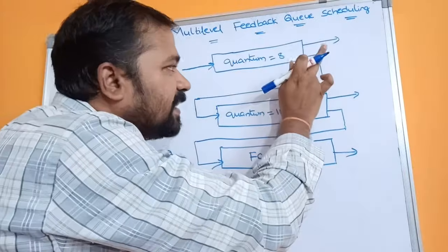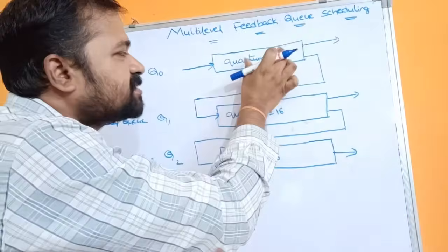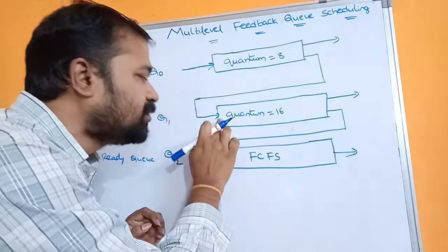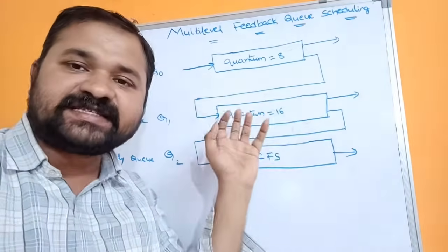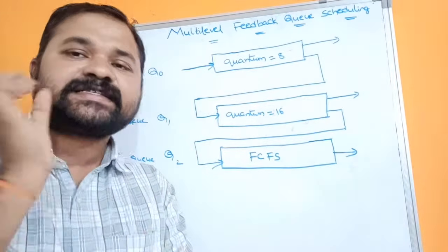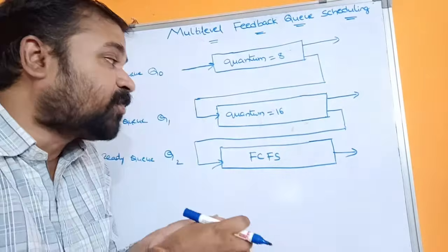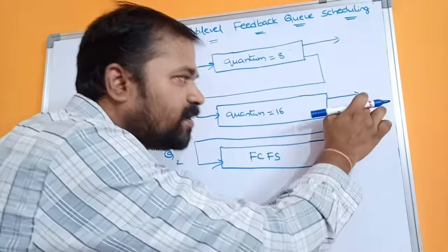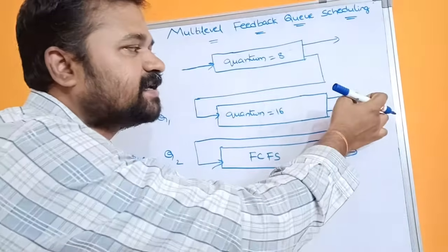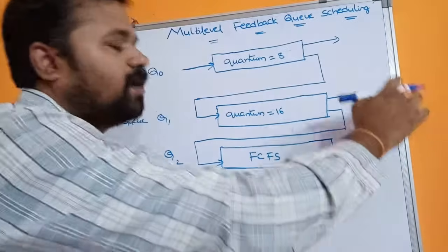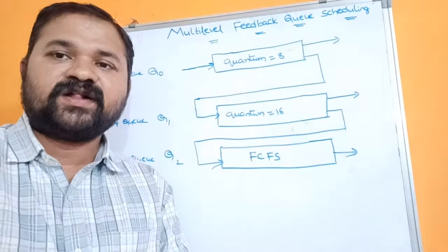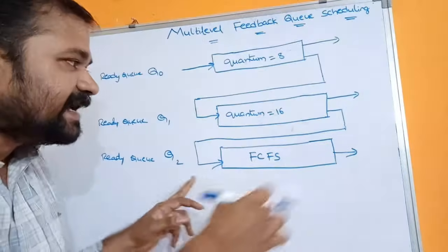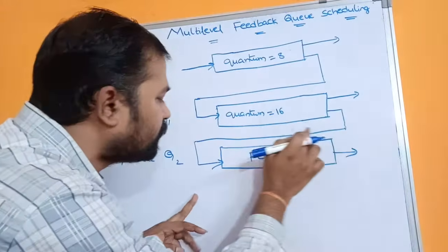After moving a process from Q0 to Q1, once all Q0 processes are done, the CPU starts executing processes in Q1, where a time quantum of 16 milliseconds is given. If a process burst time is less than 16 milliseconds, the CPU produces the output. If that process is waiting for some I/O operation, it will be moved to the waiting queue. However, if the burst time is greater than 16 milliseconds, that process will be moved from ready queue Q1 to ready queue Q2.